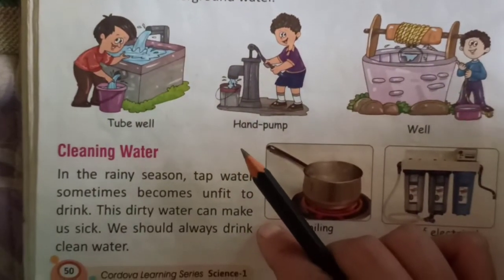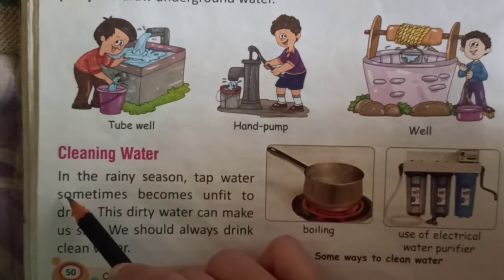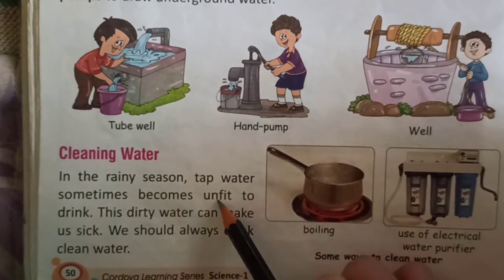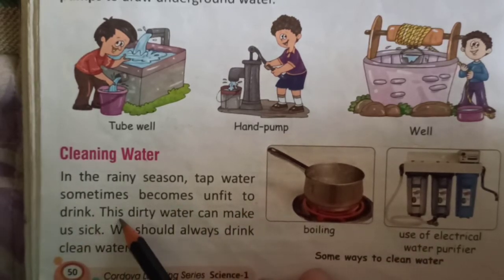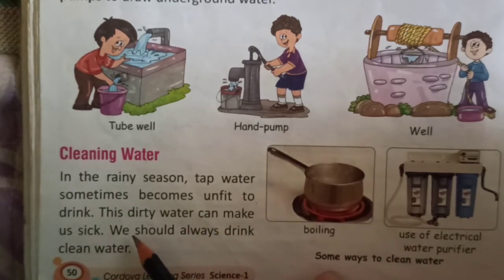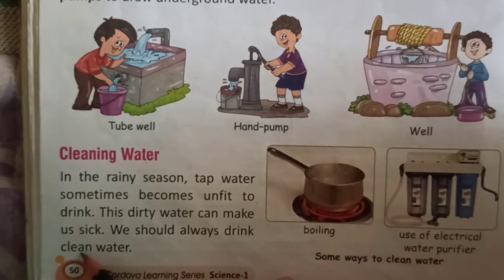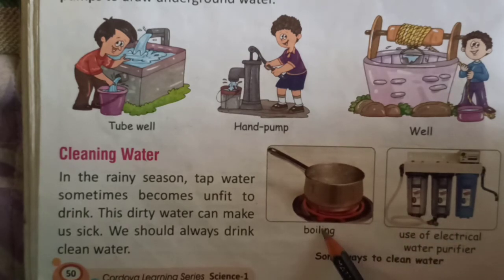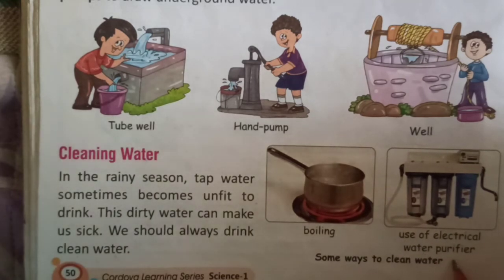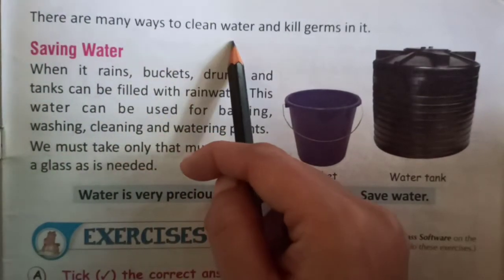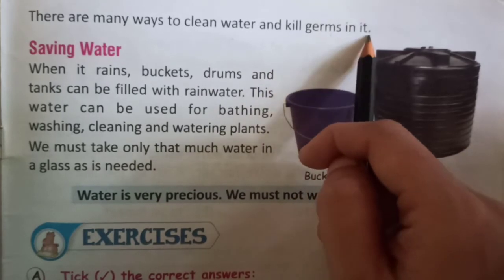The next point is cleaning water. In the rainy season, tap water sometimes becomes unfit to drink. This dirty water can make us sick. We should always drink clean water. Here you can see some ways to clean water — boiling of water and use of an electrical water purifier. There are many ways to clean water and kill germs in it.